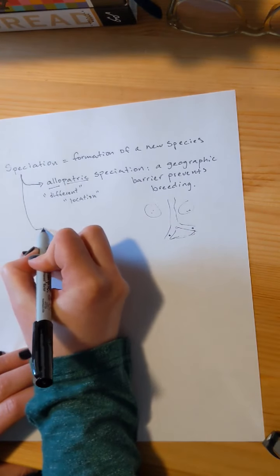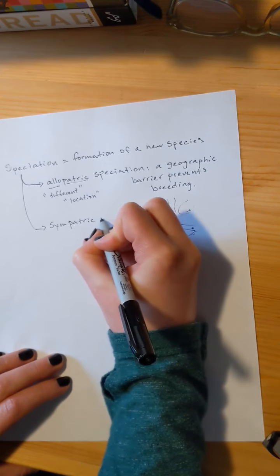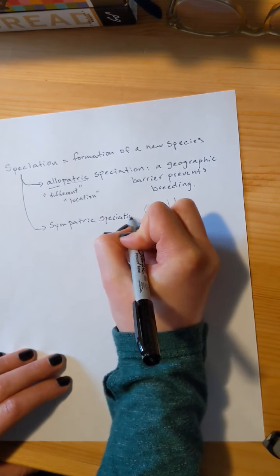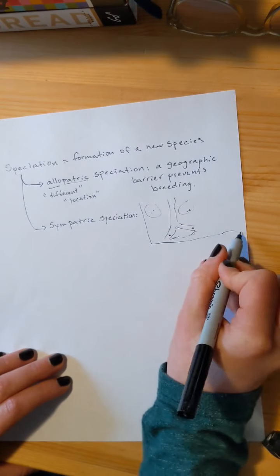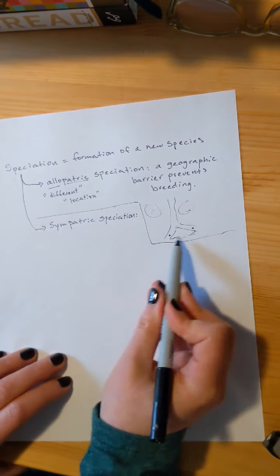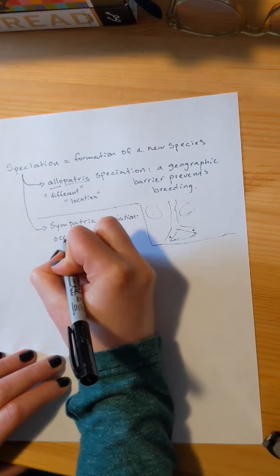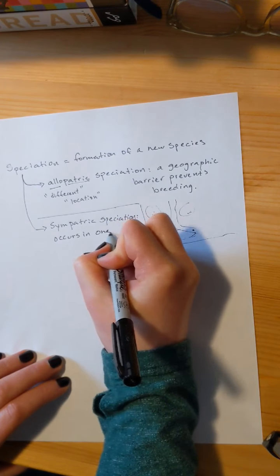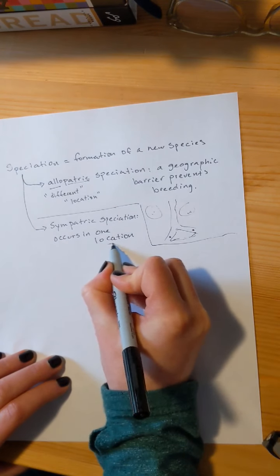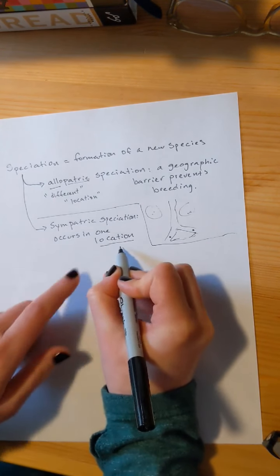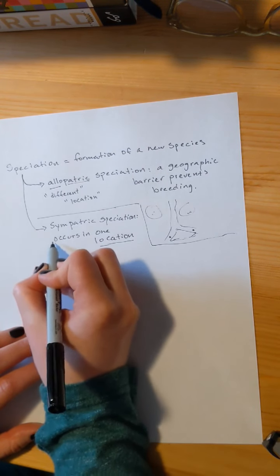The other type of speciation that we have is sympatric. So sympatric speciation occurs in the same location. So there's no longer a barrier, it's in the same location.